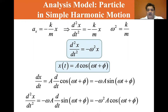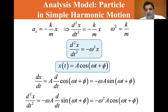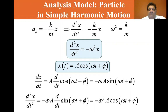Taking the derivative of minus omega A sine(ωt + φ), the acceleration d²x/dt² equals minus omega squared A cosine(ωt + φ). You can see that satisfies the equation d²x/dt² = −ω²x, where x is A cosine(ωt + φ).